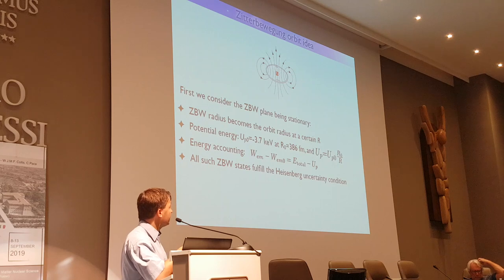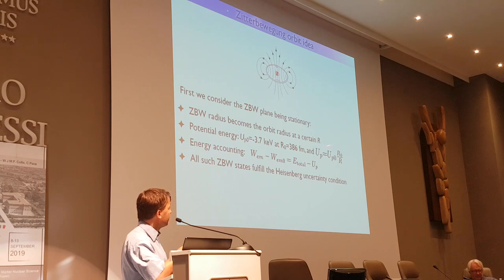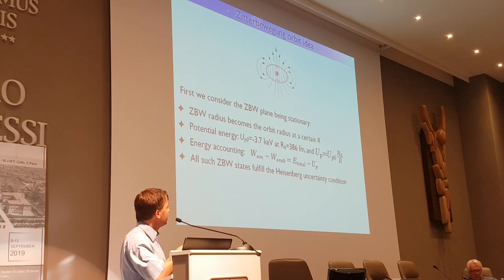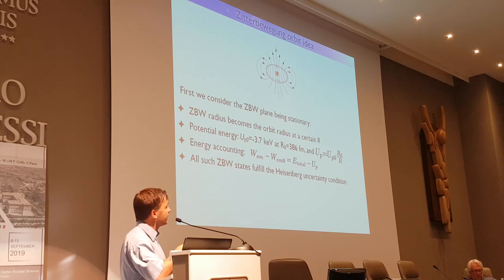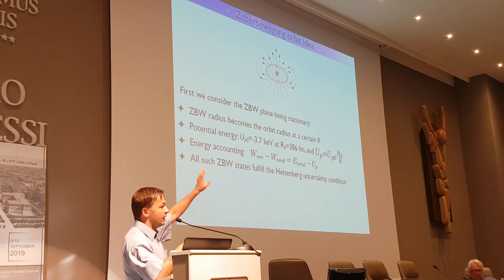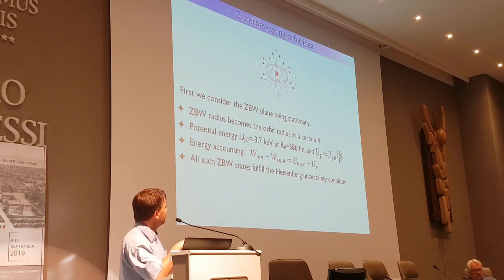Let's consider the energy balances. When the electron is at distance r from the nucleus, it has the electric potential energy described by a simple formula. At the Zitterbewegung orbit, the potential energy is about 3.7 kilo-electron-volts, and if it is closer, the actual potential energy is proportionally larger. A simple calculation says that if the electron starts from a standstill far away and falls into the potential well of the nucleus, the difference of electromagnetic field energy equals the potential energy.